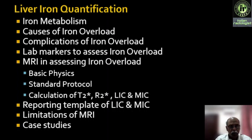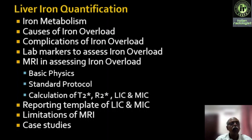Then we will cover the MRI proper — where we assess iron overload, basic physics of MRI, the standard protocol followed today, and how to calculate the parameters used by MRI like T2, R2, T2-star, R2-star, liver iron quantification, and myocardial iron concentration. We will discuss how to report and interpret values — once you have a T2-star value, R2-star value, T2, or R2 — how to report and interpret based on standard guidelines, what are the limitations of MRI, and then we will look at some case studies.